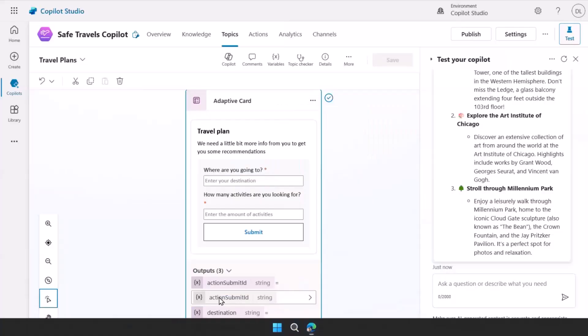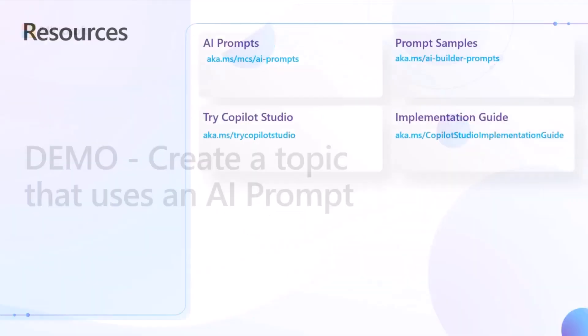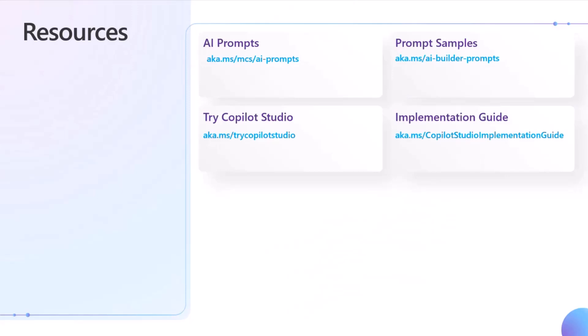Let me go back to my slides and give you a couple of extra resources. You can go to the AI prompts link at aka.ms/mcs.ai-prompts, which shows documentation on how to create AI prompts in Copilot Studio. We have a whole bunch of prompt samples, just like the travel prompt I showed. You can try out Copilot Studio, and there's also a really good implementation guide — when you're working with Copilot Studio and want to enable it inside your enterprise organization, that guide helps you see what you can do.